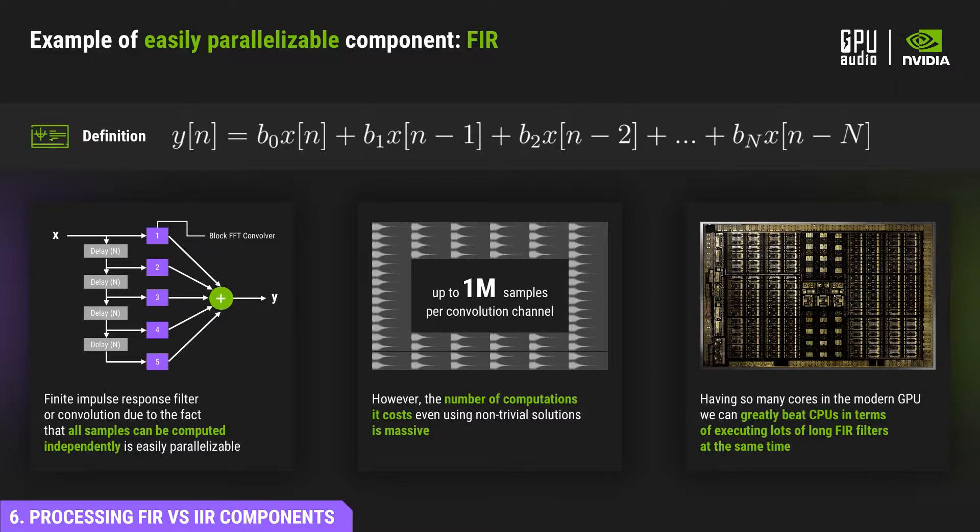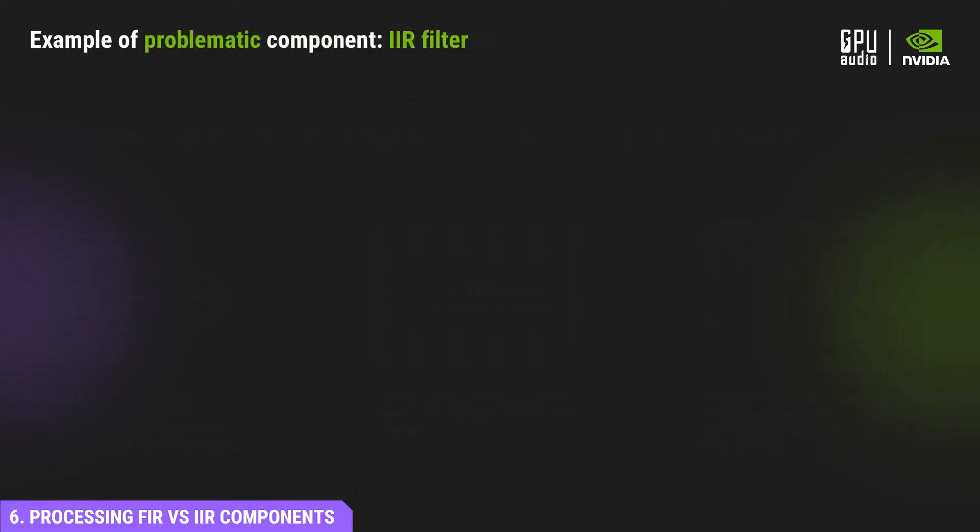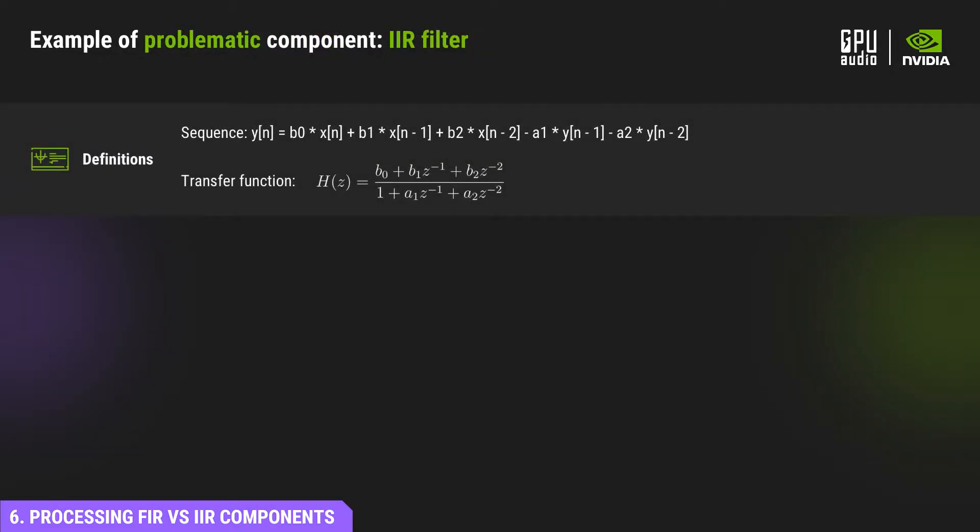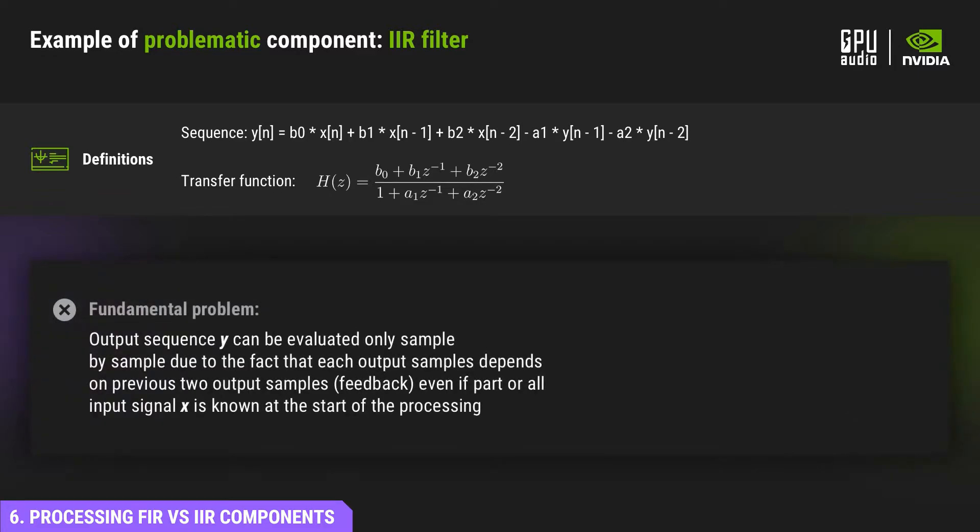But let's not forget about the second bucket of algorithms with data dependencies. An IIR filter is a component from the second bucket. Here we have a definition of a second order IIR filter, infinite impulse response.